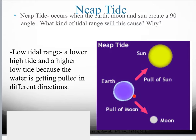Our high tide is still going to be at the moon because there are two factors that affect gravity. One is mass — the moon has less mass than the sun. But the second factor is distance, and the sun is really far away, so it's going to have about half the effect of the moon. The moon has twice the effect of the sun because it's really close. So our high tide is still here at the moon, but the sun is going to steal some of that water and pull it towards the low tide — making our high tide not as high and our low tide not as low. So our tidal range is going to be low.